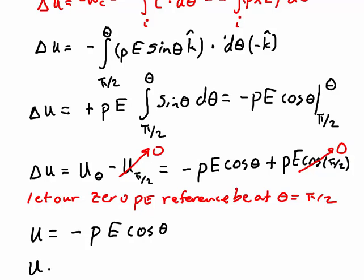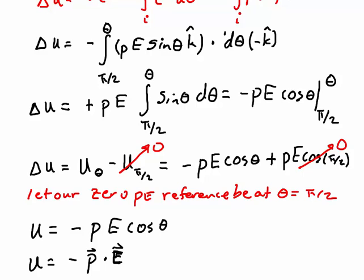Or more compactly, it's minus p vector dotted with e vector. So take the dot product between the dipole moment and the electric field and you have calculated the potential energy that the dipole has in the electric field, of course, given that we have that zero potential energy reference point. A very useful little formula to know. All right, that finishes this video.